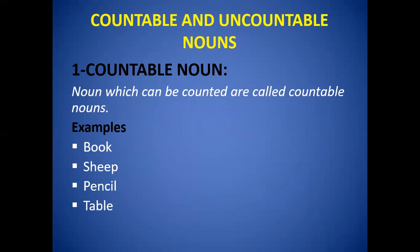Now let's see what are countable and uncountable nouns. Nouns which can be counted are called countable nouns — jinko ham count kar sak hain, gin sak hain. Like if you see 'book,' we can count it: one book, two books, three books, or many books. Similarly, sheep — ek bhi ho sakti hai, sheeps bhi ho sakti hai. Pencil, two pencils, three pencils or one pencil. Similarly, two tables, many tables, some tables.